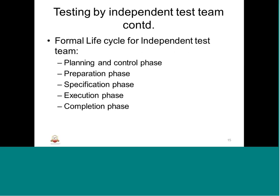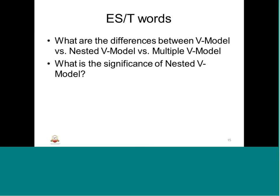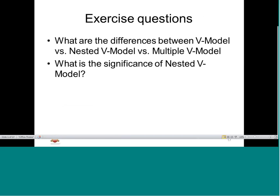There are 5 stages of the normal life cycle for independent testing: planning and control phase, preparation phase, specification phase, execution phase, and completion phase.